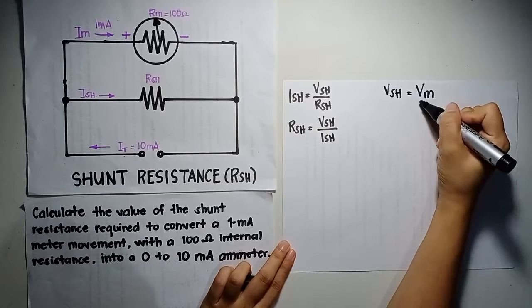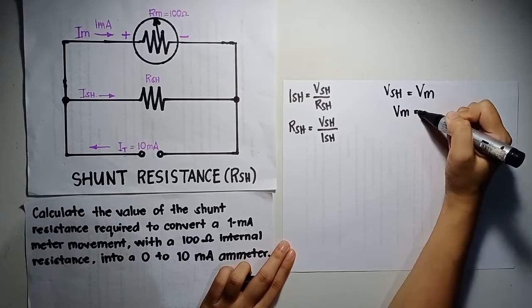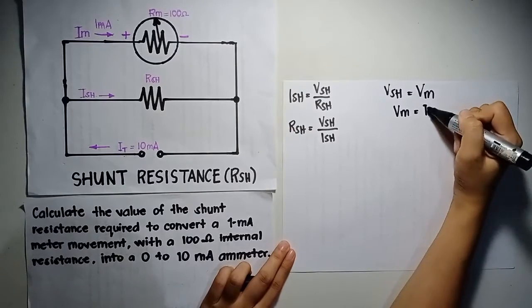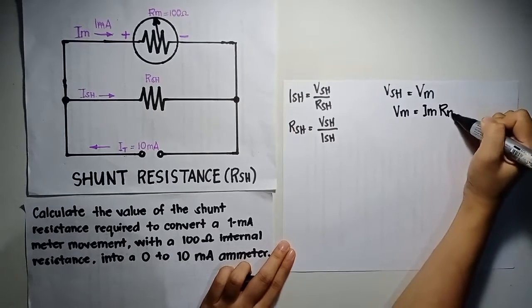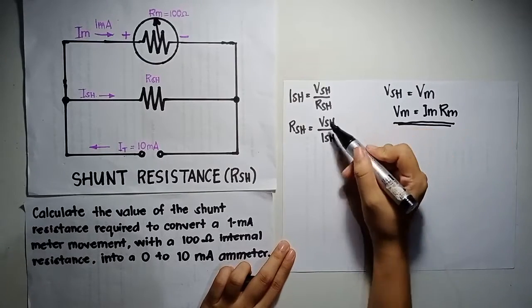In finding the value of Vm, we have given values of Im and Rm, so we can substitute Vm to Vsh.